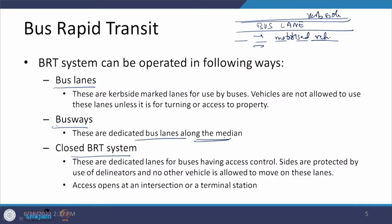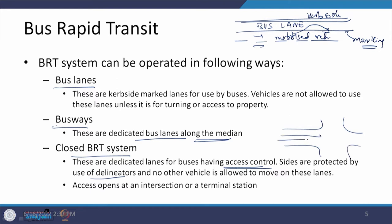In a closed BRT system, when a bus lane is done by way of marking only, other vehicles can maneuver into it and create problems for buses. But in a closed BRT system, there is access control — the sides are protected by delineators and no other vehicle is allowed to get into these lanes. At intersections, the access control by delineators closes at those points.